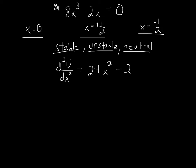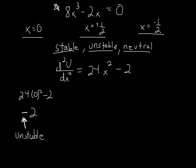Now, to find what type of equilibrium point I have — stable, unstable, or neutral — I simply plug my numbers in to the second derivative. Let's do that for x equals 0: I plug in 0, so I do 24 times 0 squared minus 2, which gives me negative 2. The negative result tells me that I have an unstable equilibrium point. If you take the second derivative of your function, plug in your equilibrium point, and the result is negative, then your equilibrium point is unstable.